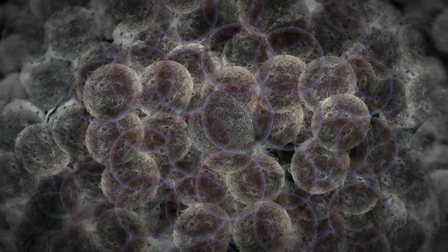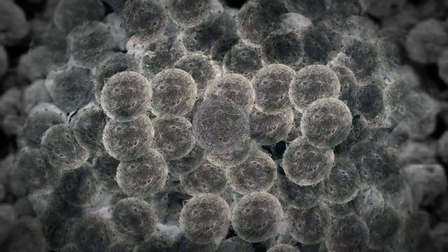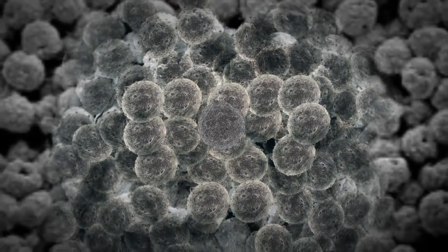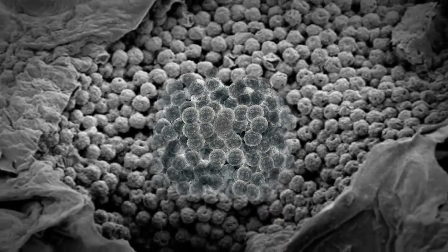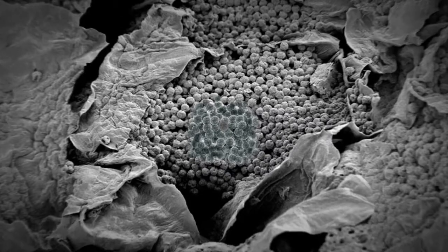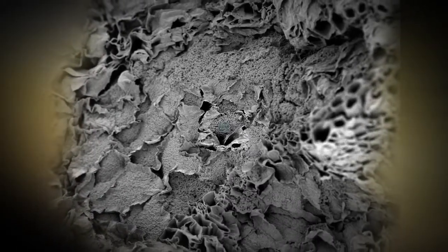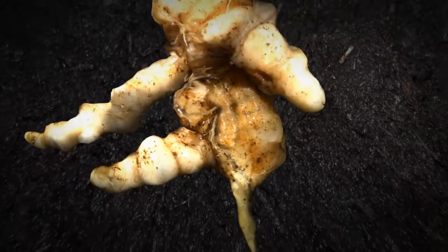Even before the plant begins to die, the pathogen starts forming new resting spores. The plasmodia, which filled up the plant cells, start dividing into the tiny spores, thousands to ten thousands per cell. We can easily see how billions of resting spores can be produced from a single infected root.